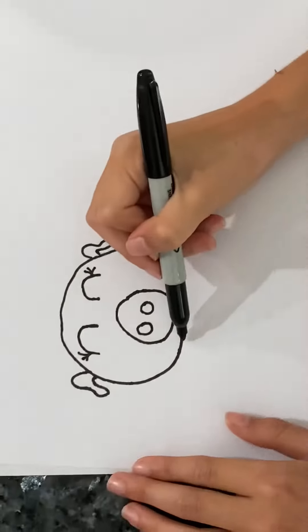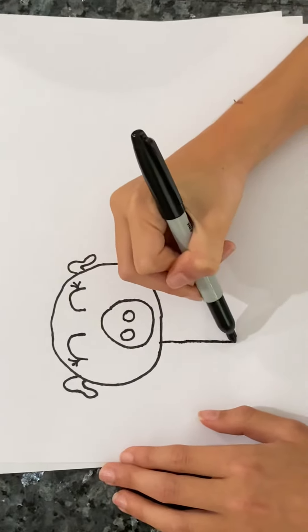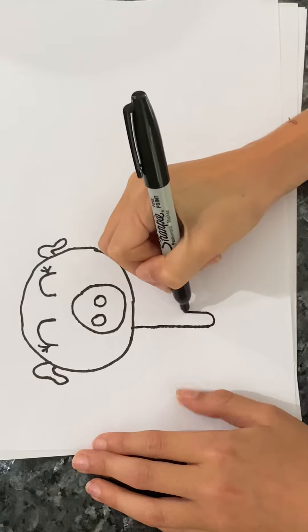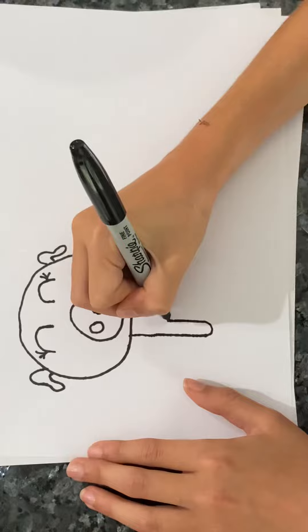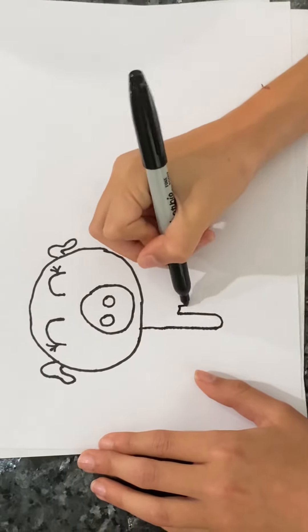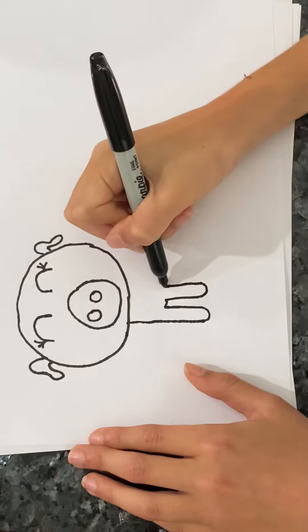Now let's draw the legs. Let's just draw kind of almost like a line right here and then go back up. Don't make your legs too long. Just stop right there and make a little hump there and draw another leg just like that one right there.